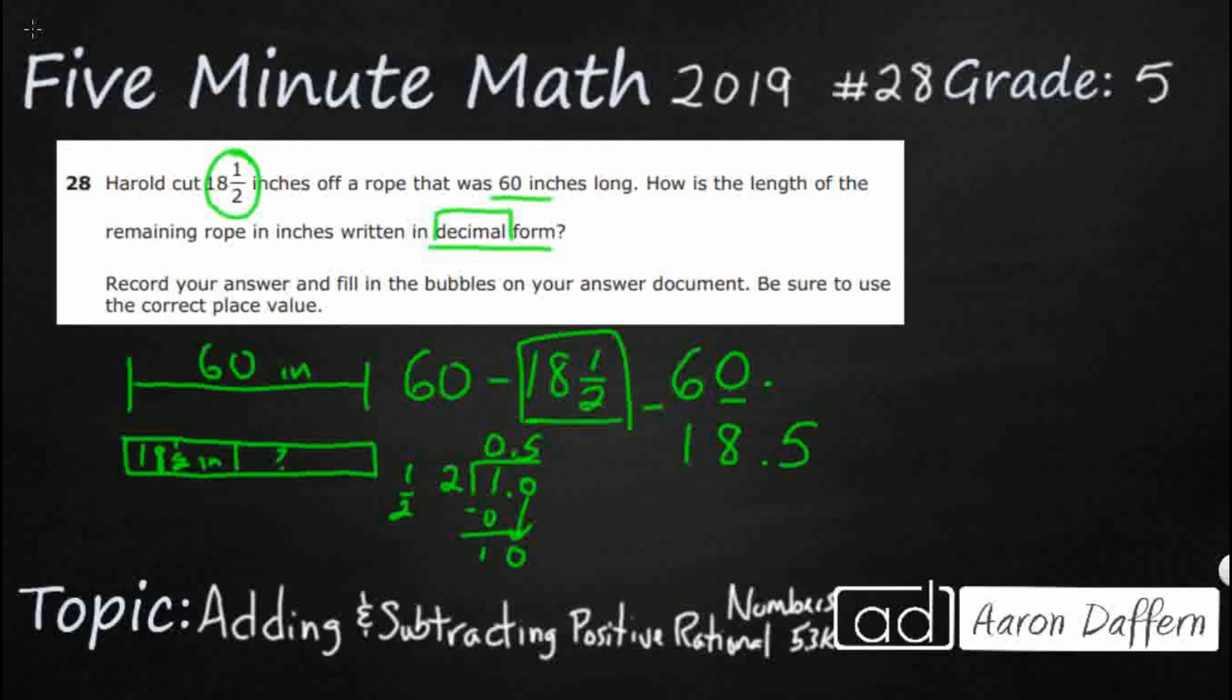Before we subtract this, what we need to do is we need to put a zero up here on top because there needs to be at least something above that five. And the zero is going to be a placeholder since it has no value. And now we have to do quite a bit of regrouping. So that's going to be five. That's ten. Take one away from ten. And we've got ten tenths. Now we can subtract. That's going to be five. That's one. Looks like 41.5.